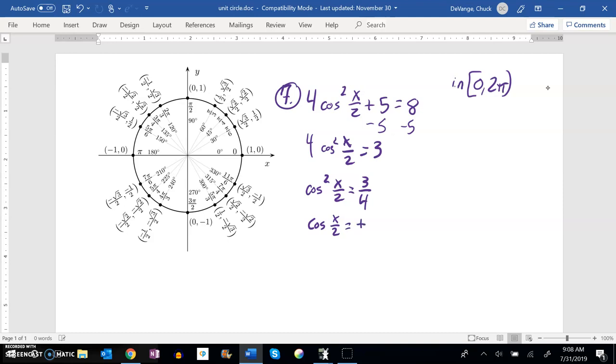If I square this side, don't forget to bring a plus or minus in. Square root of three is square root of three, square root of four is two. So cosine of x over two equals plus or minus root three over two.